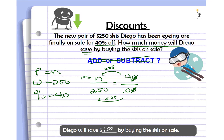Did you find that the discount amount was $100? If so, great job! If not, pause the video and look at the work shown to see if you can find your mistake. If you can't find your mistake, ask your teacher.